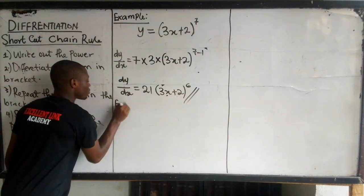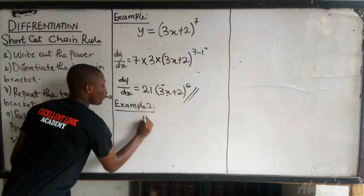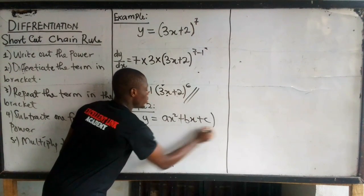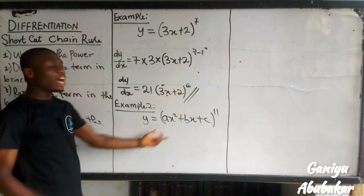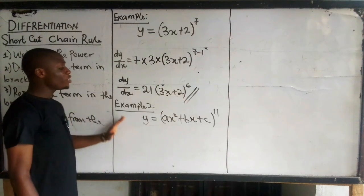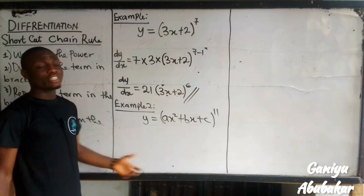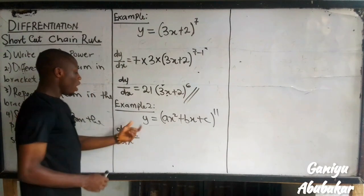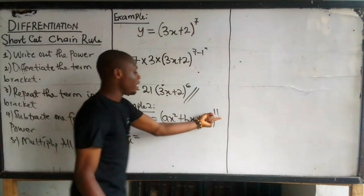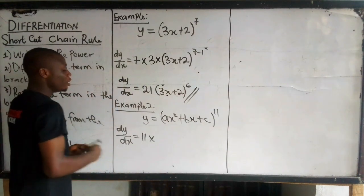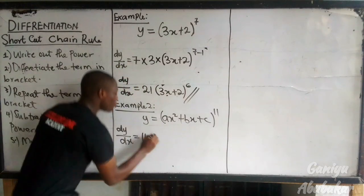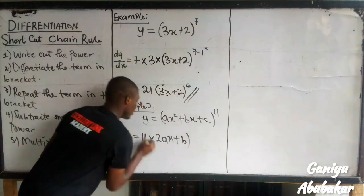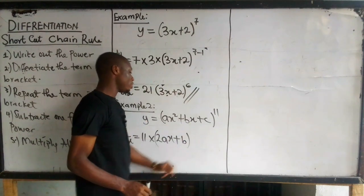Example 2: if I have y equal to (ax² + bx + c) all to the power 11. To avoid a longer procedure, let's use the chain rule shortcut. Differentiating y with respect to x, dy/dx equals: step one, write out the power — the power here is 11. So I have 11 multiplied by the differentiation of the term in brackets. Differentiating ax² + bx + c gives 2ax + b.